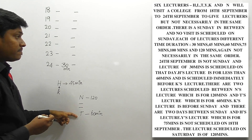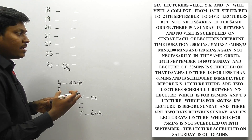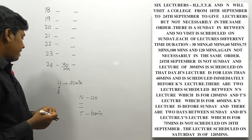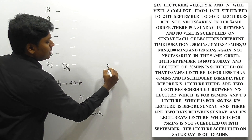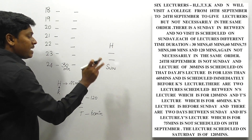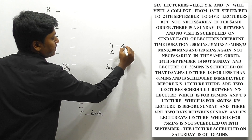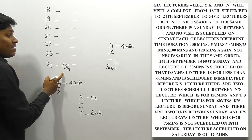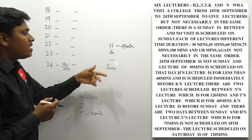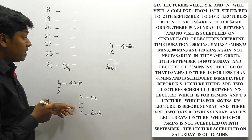K's lecture is before Sunday — not necessarily immediately before Sunday. Also, there are two days between Sunday and H's lecture. So if we assume a Sunday position, H should be placed two days after Sunday, and K must appear before Sunday. We already know K is immediately before H.